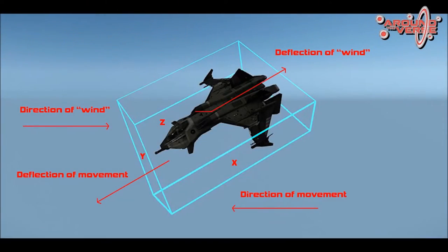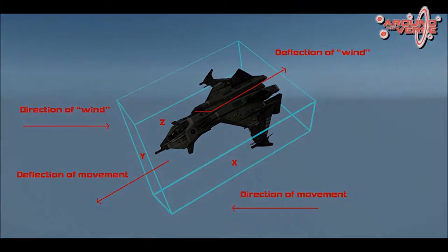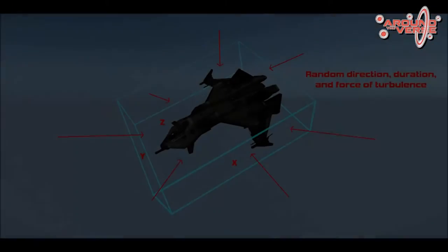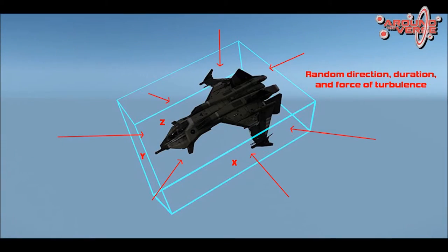Atmospheric density increases the closer you get to planetary surfaces, and will include pockets of varying densities with fluctuations such as wind and turbulence. Your ship's max safe speed decreases as atmospheric density increases, so you want to pay close attention to the velocity and altitude of your ship, otherwise you risk damaging the ship during flight.